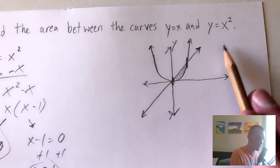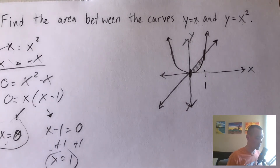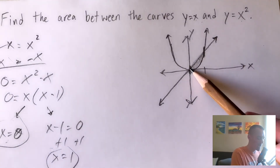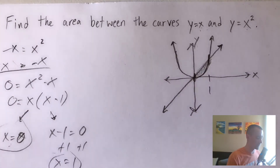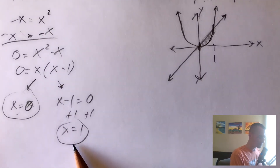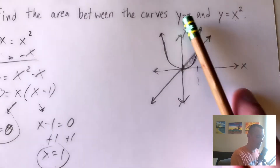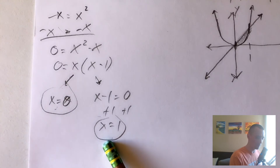So y equals x and y equals x squared intersect at x equals zero and x equals one. We also want to figure out which function is higher than the other over this area. From our graph we can see that our linear function is the top function and the parabola is the bottom. But if we didn't have a graph, we'd just take some x value within that range between zero and one and plug it into both functions to see which gives a higher value.